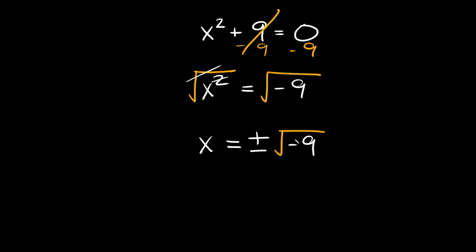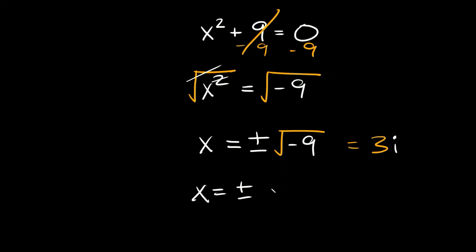We can't actually take the square root of a negative number, so that means we're going to have an imaginary solution. So what is the square root of negative 9? Well, the easy way to do this: the square root of 9 is just 3, and since we have a negative number in here, we're going to have an i next to it representing our imaginary solution. So x is equal to plus or minus 3i — positive 3i or negative 3i.